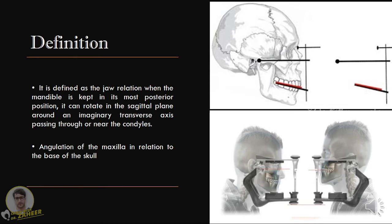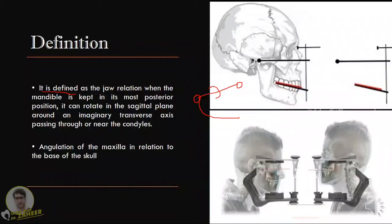As the definition goes, orientation jaw relation is the jaw relation when the mandible is kept in its most posterior position. The mandible can rotate in the sagittal plane around an imaginary transverse axis passing through or near both the condyles. So the definition basically explains that if a line joining both condyles is passed, this is an imaginary transverse axis around which the mandible can rotate freely, and this rotation happens in the sagittal plane.